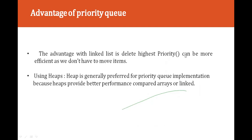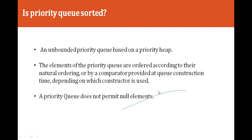What is the advantage of a priority queue? With a linked list, retrieving the highest priority item can be more efficient as we don't have to move items. Using heaps, heaps are generally preferred for priority queue implementation because they provide better performance compared to arrays or linked lists. A priority queue is sorted — an unbounded priority queue based on a priority heap orders elements according to their natural ordering or by a comparator provided at queue construction time. A priority queue does not permit null elements.